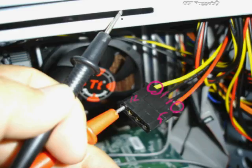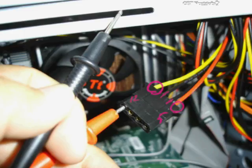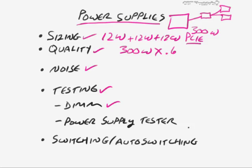I put the red probe into the yellow 12-volt wire, grounded the other probe, and got a reading of how many volts were coming off that Molex connector — something like 12.3 volts. It doesn't have to be exactly 12 volts; if you're within 10% plus or minus, you're normally going to be just fine.